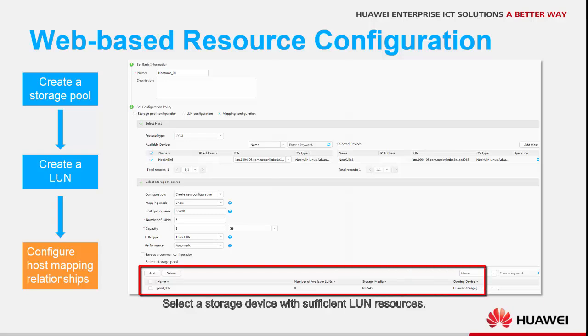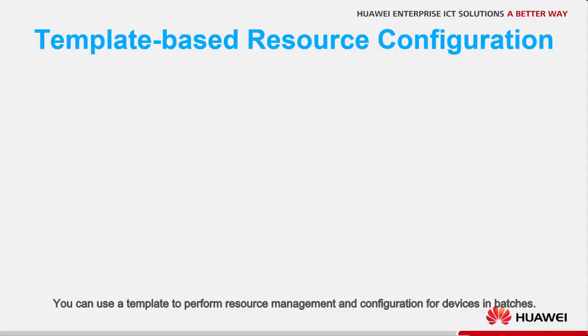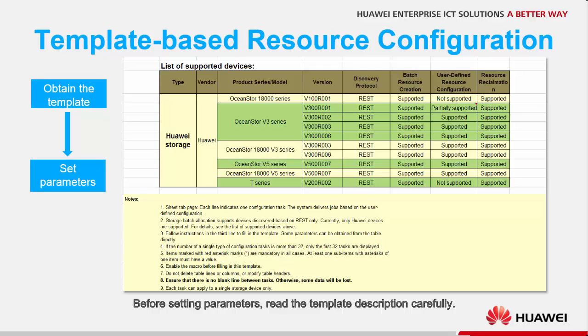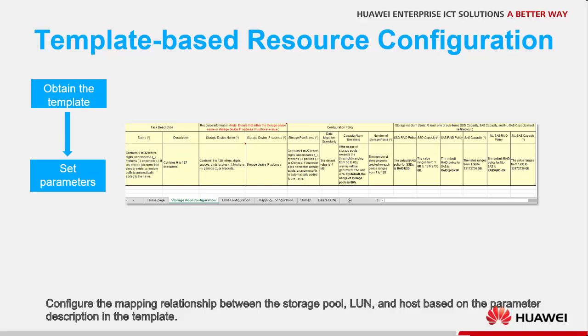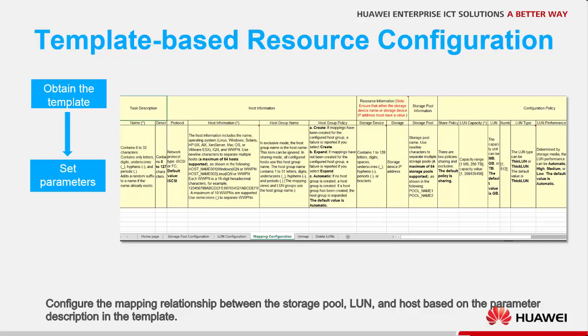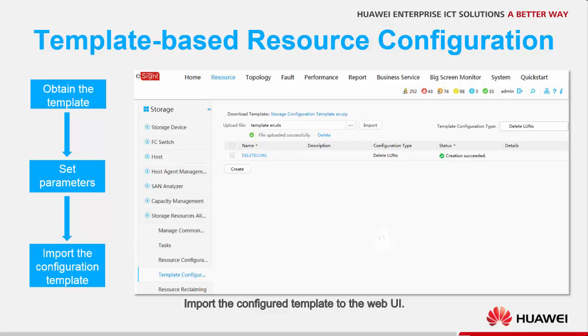Select a storage device with sufficient LUN resources. You can use a template to perform resource management and configuration for devices in batches. Obtain the configuration template from the web UI. Before setting parameters, read the template description carefully. Configure the mapping relationship between the storage pool, LUN, and host based on the parameter description in the template. Then import the configured template to the web UI.